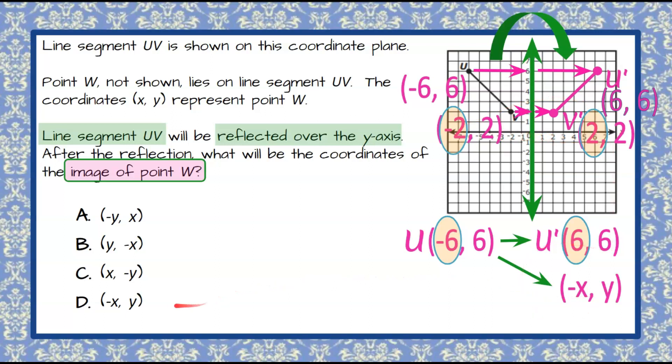So we're looking for (-x, y), which is answer choice D, which will represent the image of point W, and really any point on this line segment when it's reflected over the y-axis.